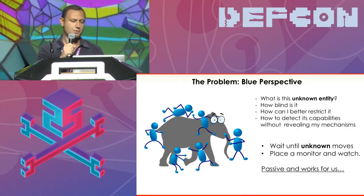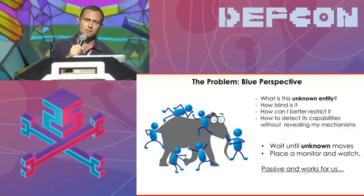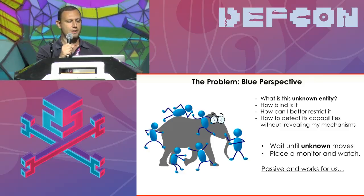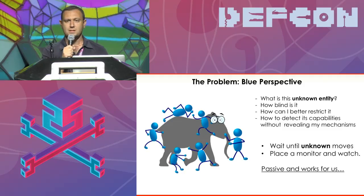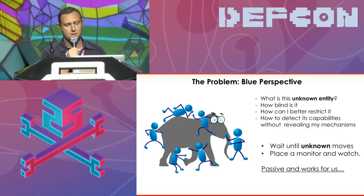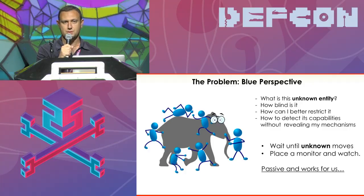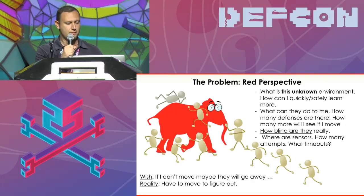From the blue team perspective, the sensory perception of what we're doing is really to understand how blind they are, what is this unknown entity, and can they detect our capabilities without revealing their detection mechanisms. They are waiting to see whether the unknown moves and how that works — it's passive, it works for them, and they're going to sit tight and look for it. But the red team perspective is different.